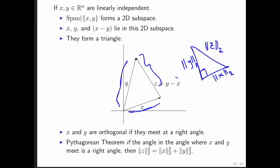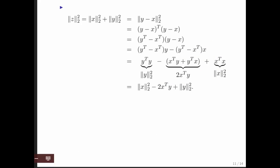But notice that z is this vector right here. So what does the Pythagorean theorem tell us? If x and y meet at a right angle, then the length of z squared must equal the length of x squared plus the length of y squared.